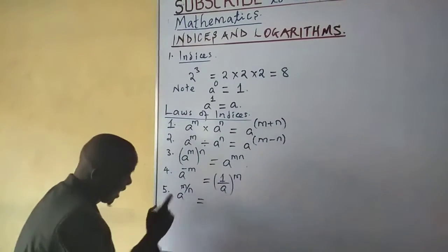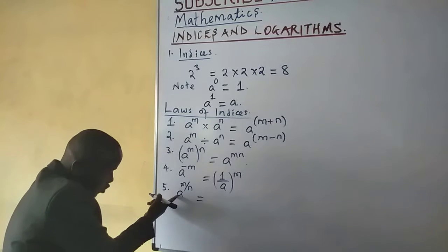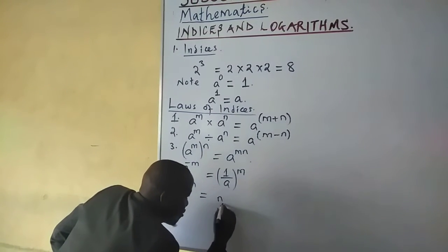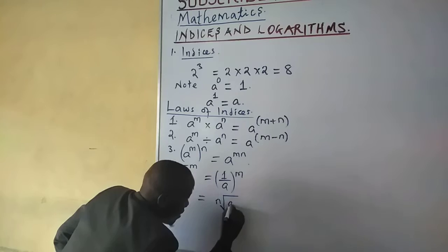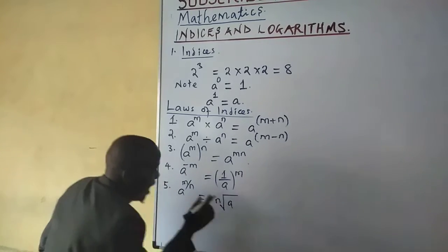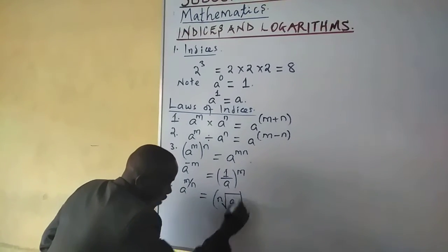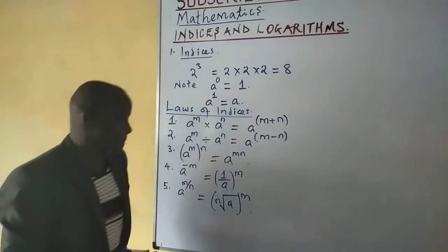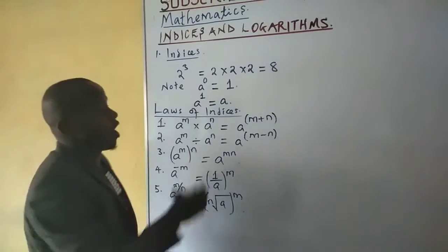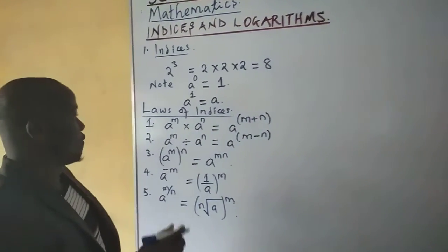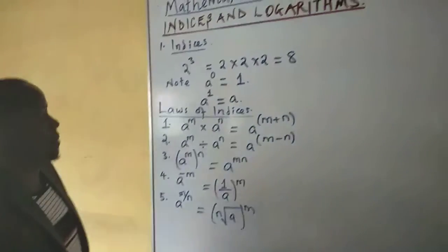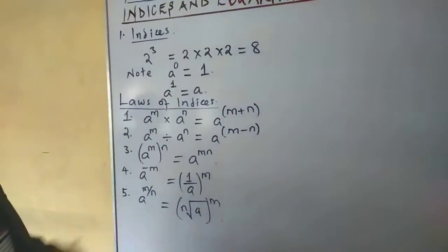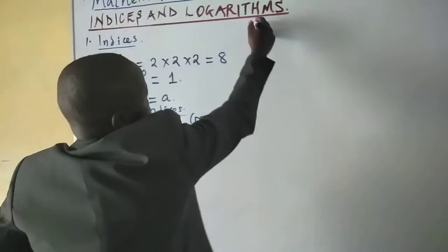The fraction law says that when you have a number a raised to a fractional power m over n, the result is you take the nth root of a and then raise it to power m. I would now like to visit some examples bearing in mind these given laws.